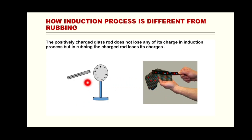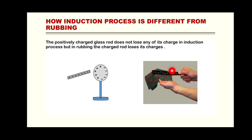In the first figure, you can see that this rod is charging this body without physical contact. And in the second figure, you can see that rubbing or physical touch is happening between the two, and after that the body gets charged.